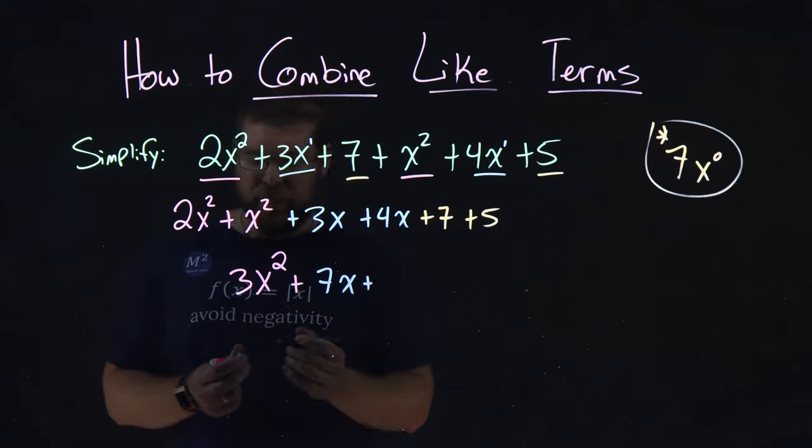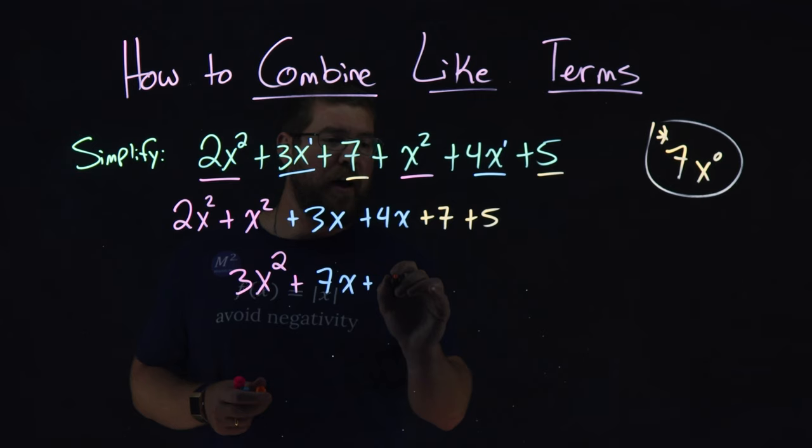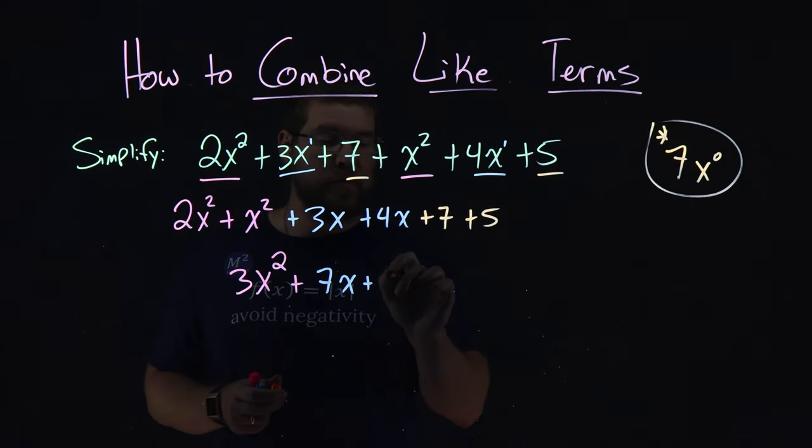And lastly, we have 7 and 5. 7 and 5 come out to be 12.